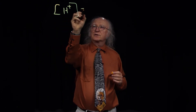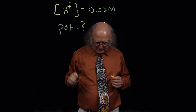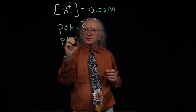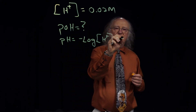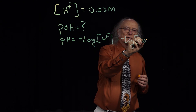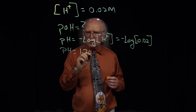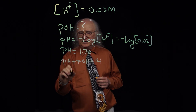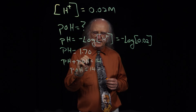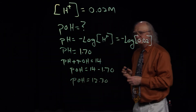Problem number six says that the hydrogen ion concentration is equal to 0.02 molar, and what is the pOH? This puts a little bit of a wrinkle in things. We remember that pH is equal to the negative log of the hydrogen ion concentration, which is equal to the negative log of 0.02. The pH, therefore, is equal to 1.70. Then, since pH plus pOH equals 14, the pOH is equal to 14 minus 1.7. The pOH, therefore, is equal to 12.3.